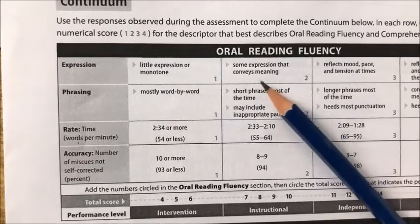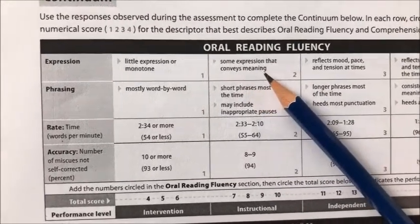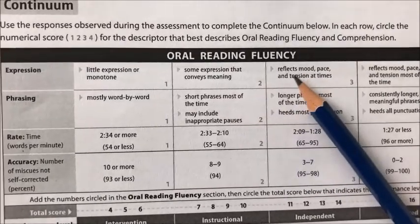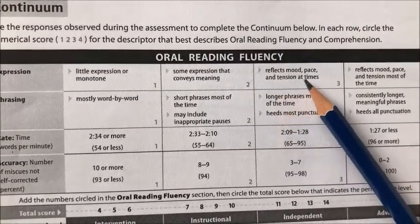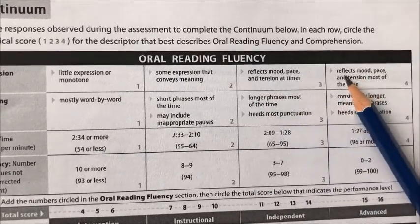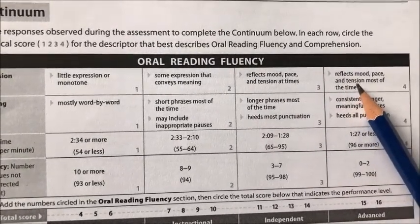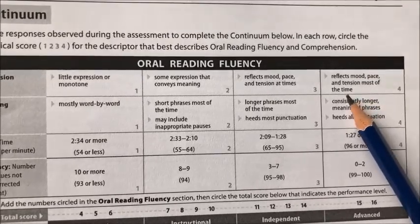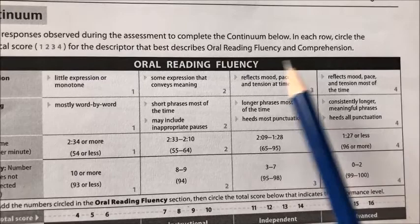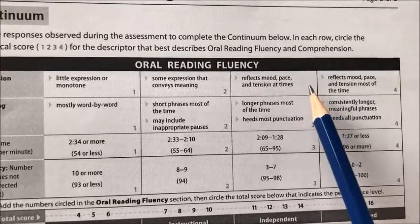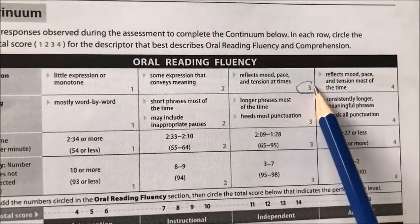Instructional has the student reading with some expression that conveys meaning. Independent reflects mood, pace, and tension at times, and advanced reflects mood, pace, and tension most of the time. During the read that we recorded, the student would fall within the independent range, so I'm going to circle that there.